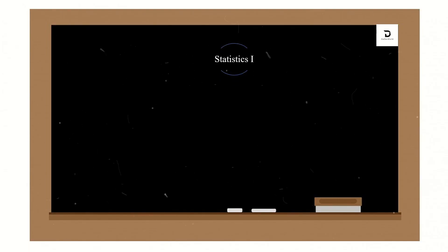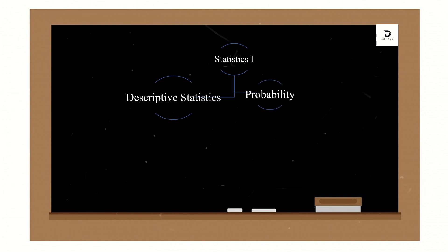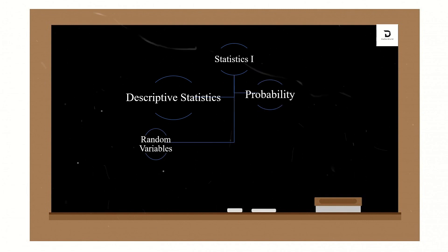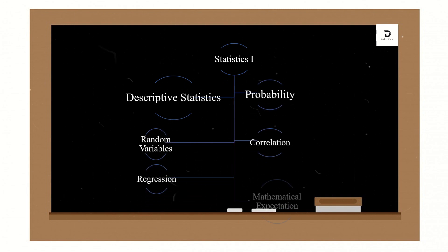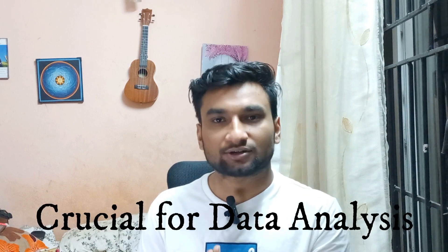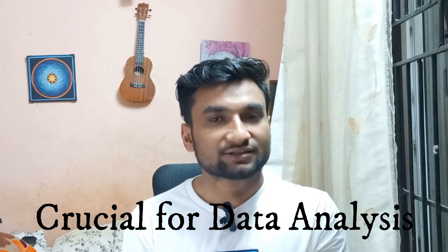Lastly, we have the subject Statistics 1. By the name itself, it covers the basics of statistics, probability, random variables, correlation, regression, and mathematical expectations. This is a crucial subject to learn to understand more about data analysis and computer science. These are the units that are included in this subject.